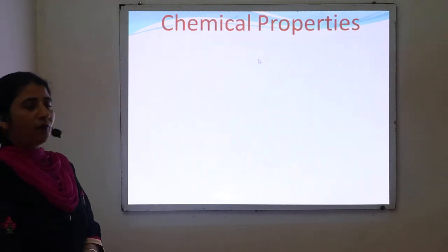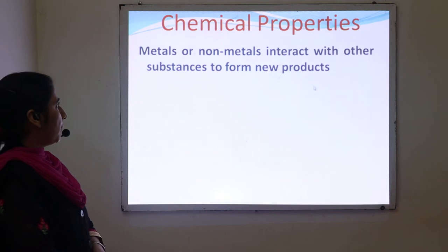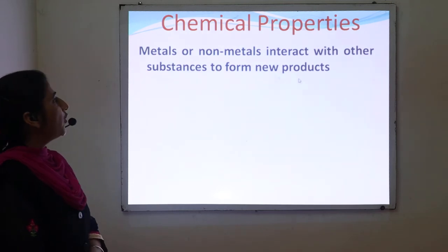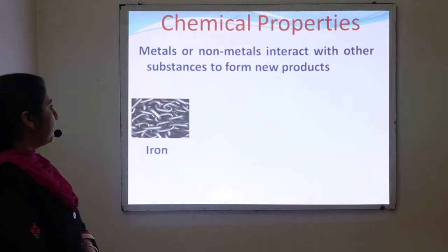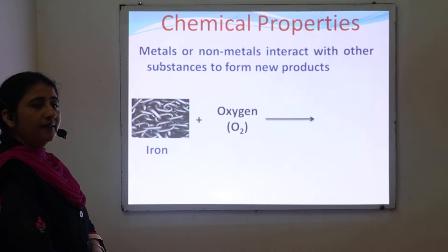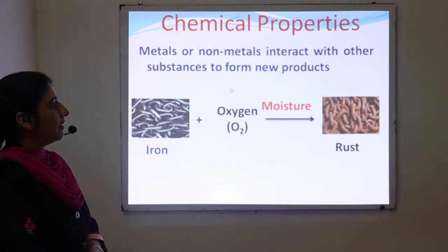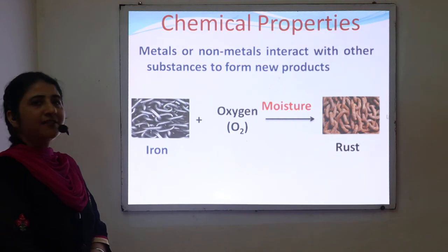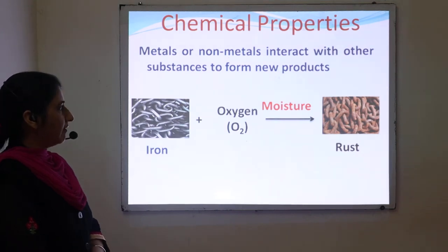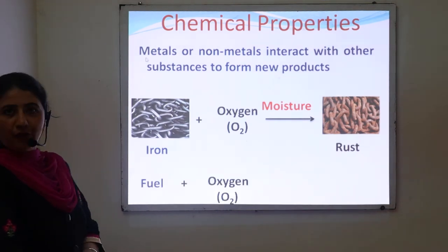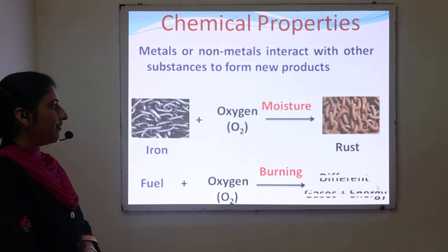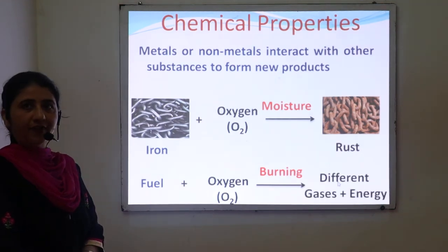Next is chemical properties of metals and non-metals. Chemical properties are those properties in which metals and non-metals interact with another substance to form a new product. For example, iron chains when they interact with oxygen form rust, which is a new product different from iron — so it is a chemical reaction. Another example is fuel that mainly contains carbon; when it interacts with oxygen, it forms different gases with the release of a lot of energy.